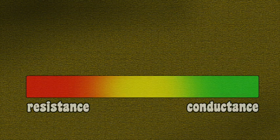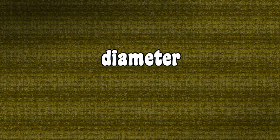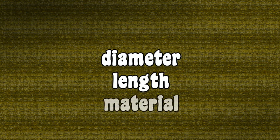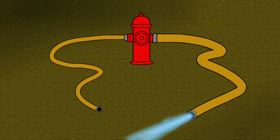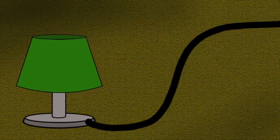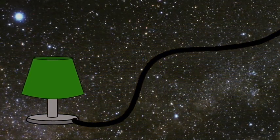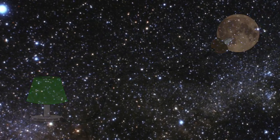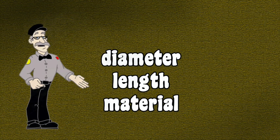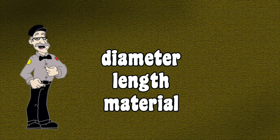Three things affect how well electricity flows through a conductor: the conductor's diameter, its length, and the material from which the conductor is made. In a wire, the larger the diameter, the easier an electrical current will flow through it. You can think of a water hose — a fat hose allows more water to rush through than a skinny one. The length of a conductor is also important. The longer a wire is, the more resistance it imposes on the flow of an electrical current. Finally, the type of material the conductor is made of plays a key part in the amount of electricity that can flow through it.